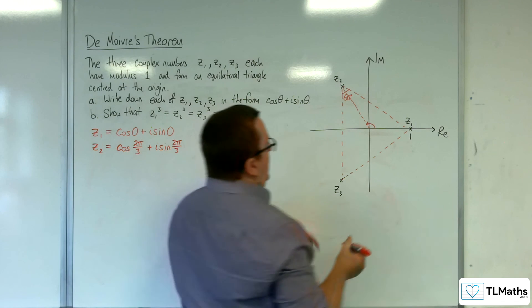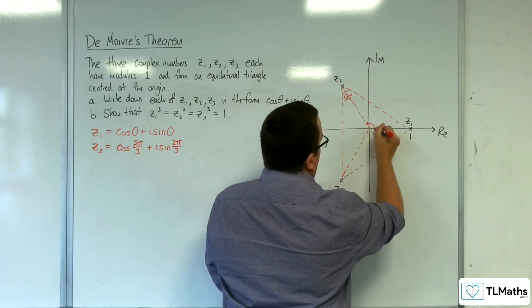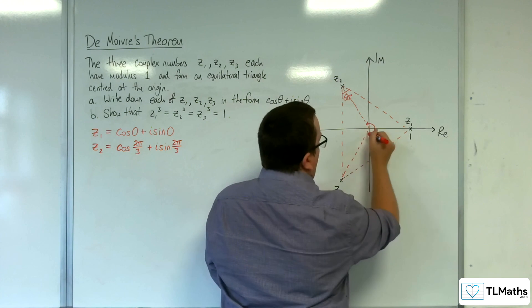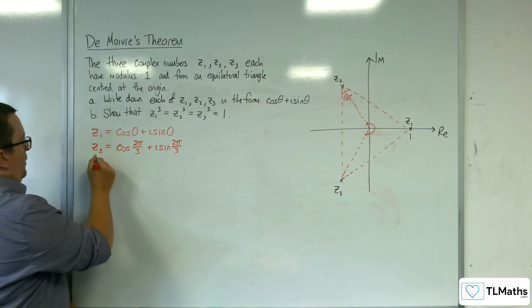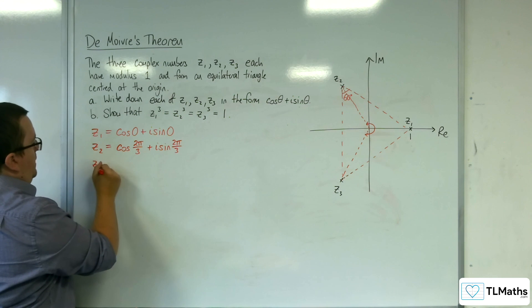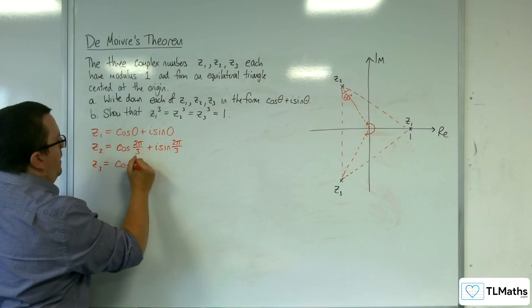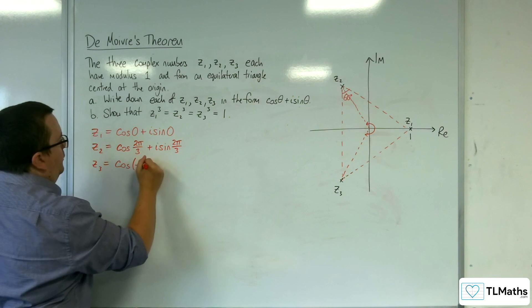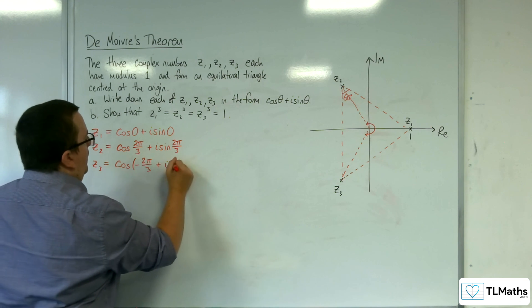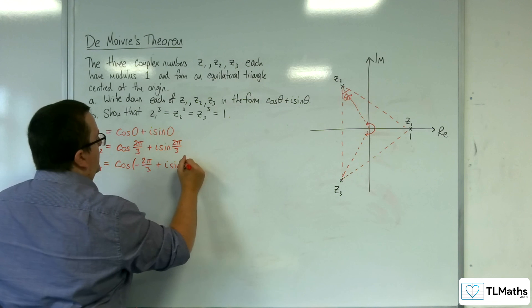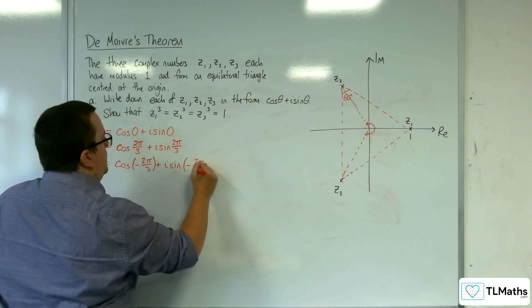And for Z3, this will be the same angle around, but negative. So Z3 will be cosine of minus 2π/3 plus i sine of minus 2π/3.